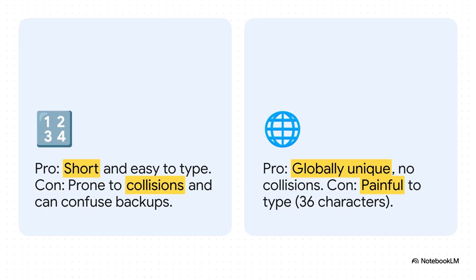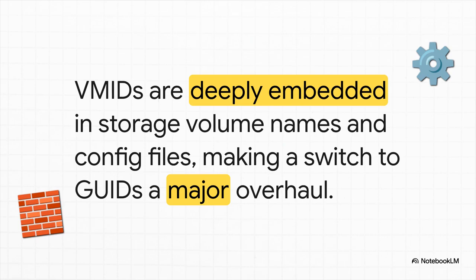But — and it's a big but — have you ever tried typing a 36-character string from memory on the command line? It's a nightmare. Suddenly, that short, simple, easy-to-remember VMID doesn't sound so terrible after all. And the real barrier here is a technical one. The VMID is deeply woven into the fabric of Proxmox — it's right there in the storage volume names, the LVM config files, it's everywhere. Ripping it out and replacing it with GUIDs wouldn't just be a patch; it would be a fundamental architectural heart transplant for the whole system. That's a huge undertaking.